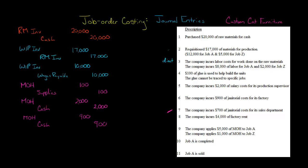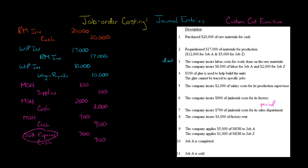Now we incur janitorial costs for the sales department. Notice — just because it's also janitorial costs, it's treated differently. Because it's for the sales department, this is not a product cost; it's a period cost. Period costs are expensed immediately. We'll put it under SG&A expense — debit SG&A expense and credit cash for $700.